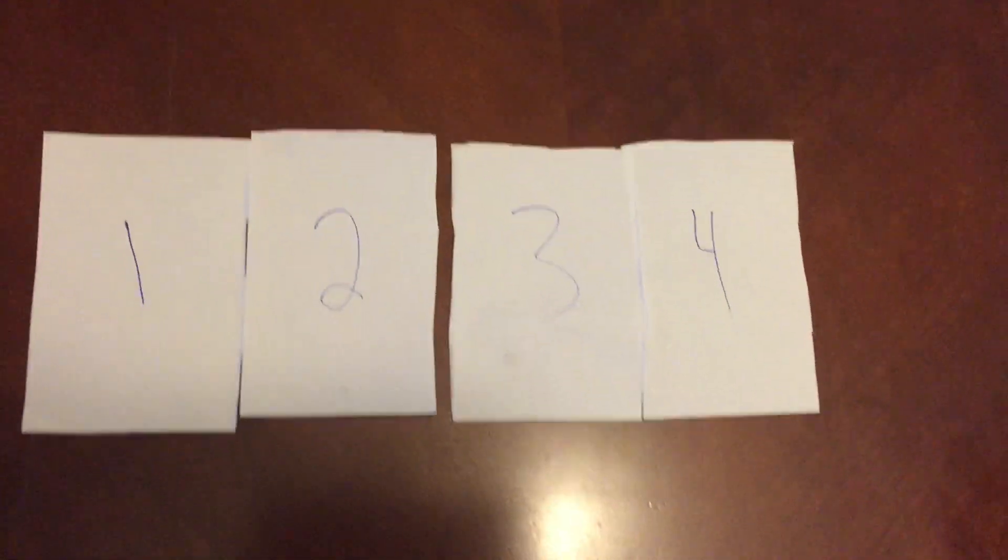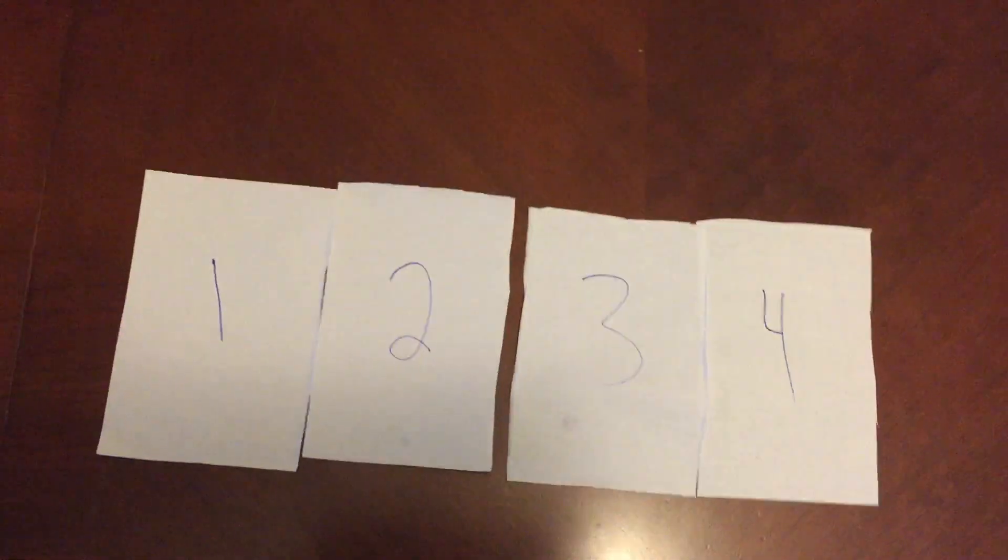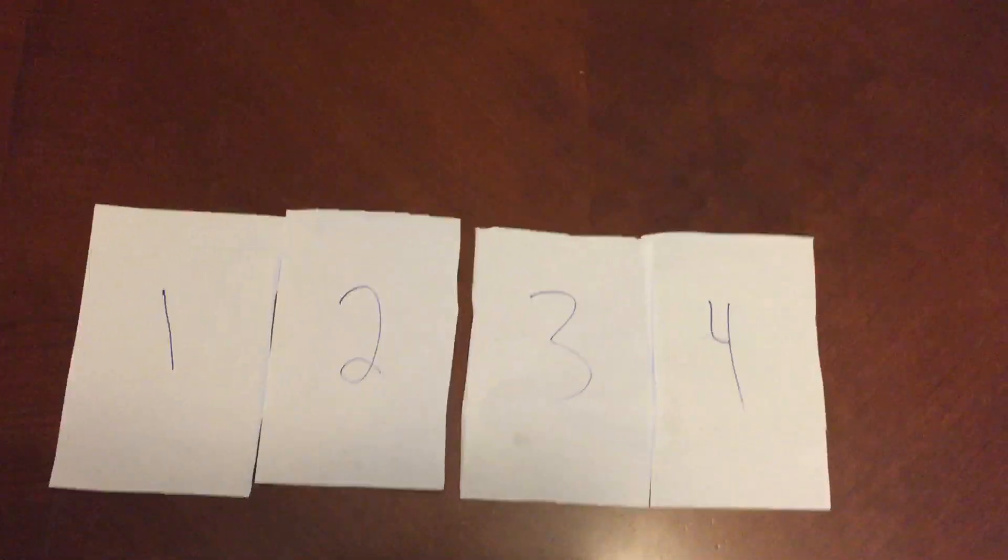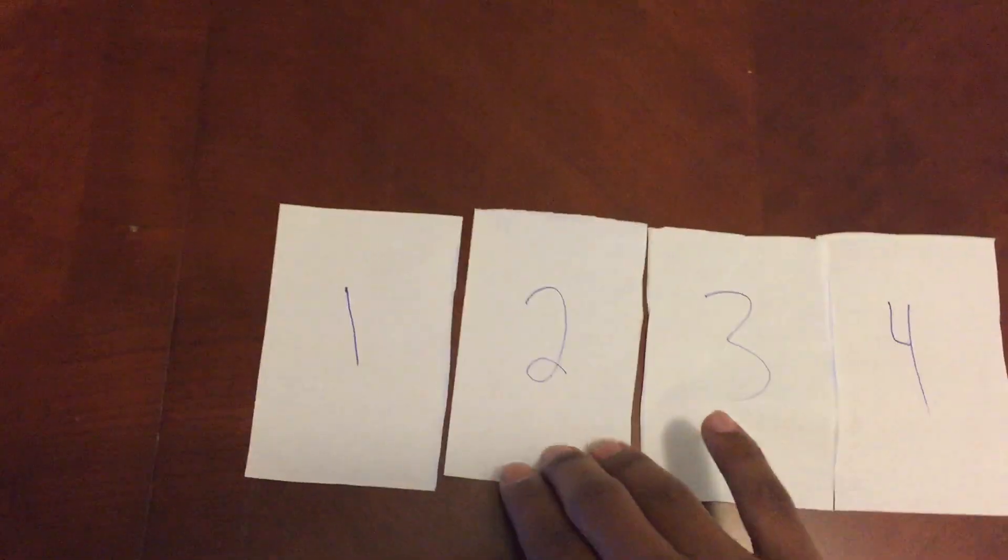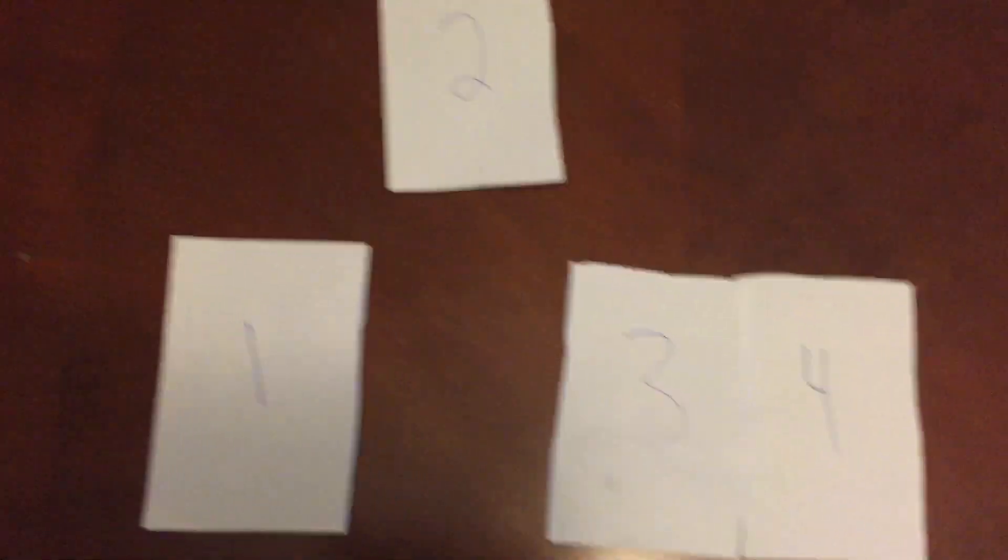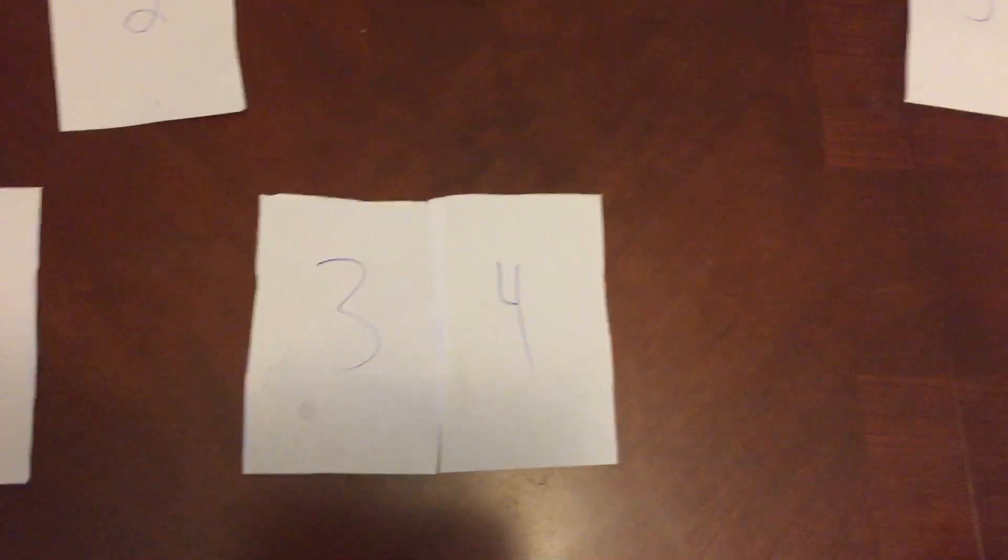Because this is not an odd array, I'm not going to get even numbers on both sides if I split it up, so I can choose two as my midpoint. Now that two is my midpoint, I can search the left and the right side.